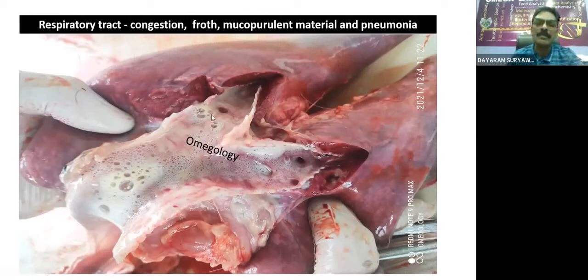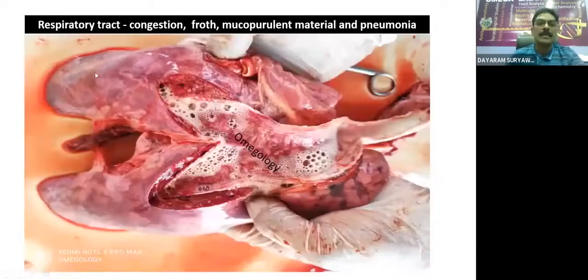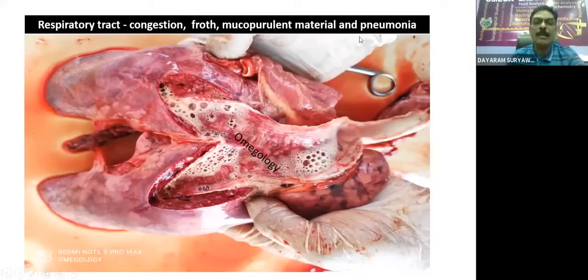Typically, what we have to do is take an impression smear from this area, stain with Leishman stains, and we are able to differentiate the different inclusion bodies present in the epithelial cells or the shed epithelial cells of the bronchus. Similarly, in the respiratory tract, we are getting froth, mucopurulent material, and pneumonia in case of PPR.